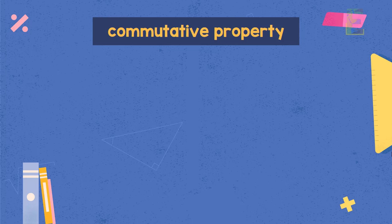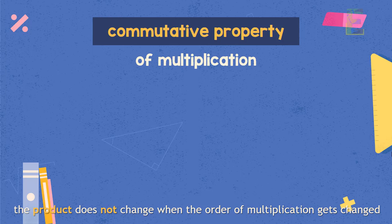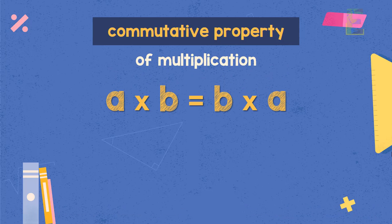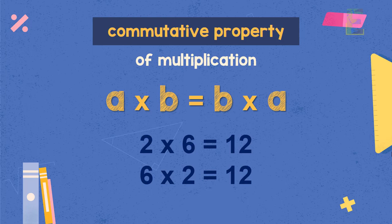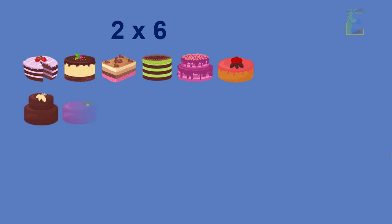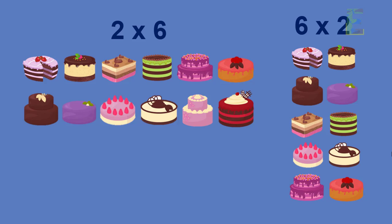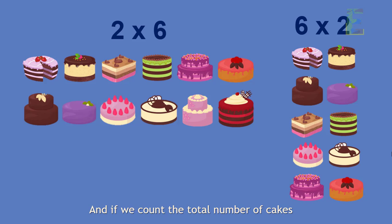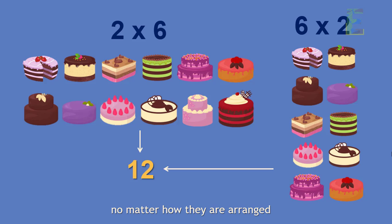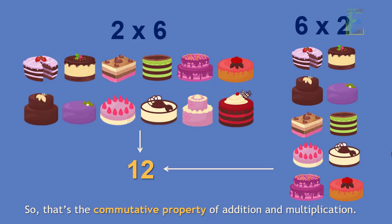For the commutative property of multiplication, it states that the product does not change when the order of multiplication is changed. For example, multiplying 2 times 6 will give you the same answer as multiplying 6 times 2. For a visualization: 2 times 6 means 2 rows of 6 cakes each, and 6 times 2 means 6 rows of 2 cakes each. They are simply a rotated version of each other, and if we count the total cakes, both have the same number — 12 — no matter how they are arranged. That's the commutative property of addition and multiplication.